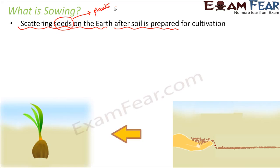In sowing, you would have seen seeds — small seeds are available and you can also purchase them from the market. When you have the soil ready, you can just put them on the soil, and then gradually over a period of time, when you water them properly, germination of the seed takes place and a small plant tends to grow from that seed. This process of scattering seeds after soil preparation is called sowing.